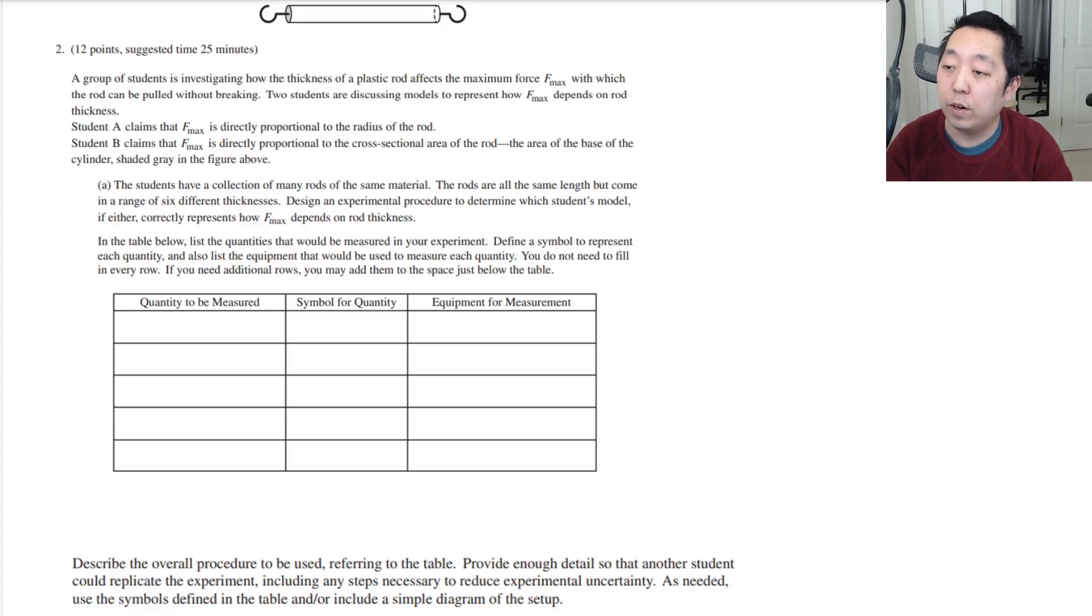All right, here's the second FRQ from the 2021 exam. As usual, if I have any corrections to make, I'll put it in the description below. So a group of students is investigating how the thickness of a plastic rod affects the maximum force which the rod can be pulled without breaking. Two students are discussing models to represent how F max depends on rod thickness.